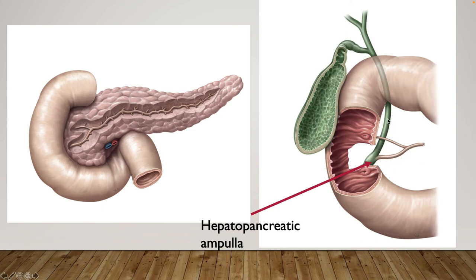The pancreatic duct joins with the common bile duct to create the hepatopancreatic ampulla, which drains bile as well as pancreatic enzymes and juices into the duodenum. This is known as the major duodenal papilla, and the smaller one up here is the minor duodenal papilla. The accessory pancreatic duct is also present. From the gallbladder, bile flows through the cystic duct, joining with the common hepatic duct to form the common bile duct, which ultimately drains its contents into the duodenum.